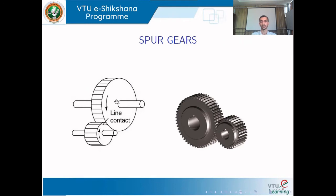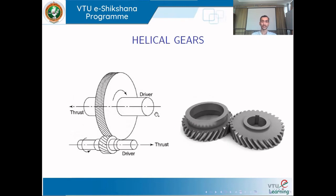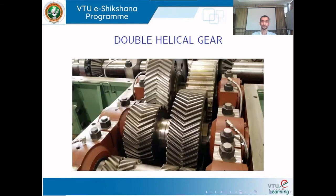Spur gears are used to transmit power between two parallel shafts, with teeth parallel to the axis of the shaft. Helical gears are also used for parallel shafts, but the teeth are inclined to the axis of the gear. Helical gears can transmit more power than spur gears with less vibration and noise.